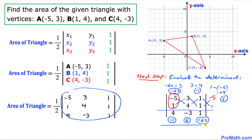The next step is to multiply out these numbers first and then we're going to add them. So 4 times negative 1 is negative 4, this becomes negative 18, and this is minus 23. If we add them, that is going to give us negative 45.